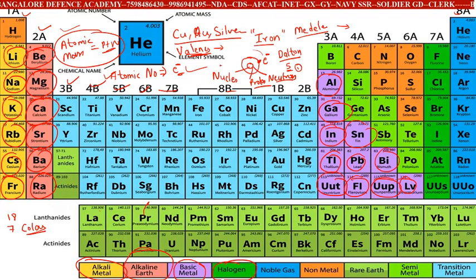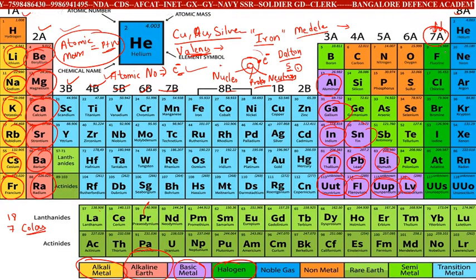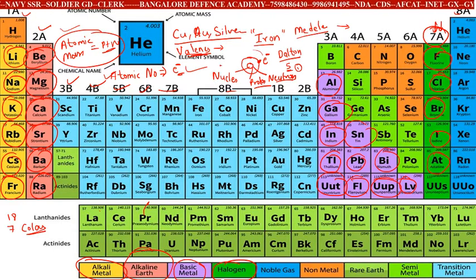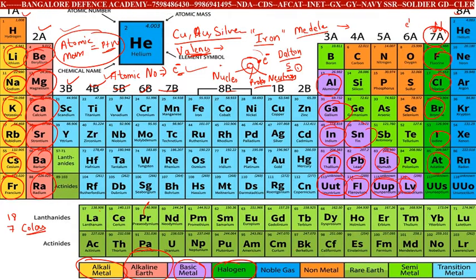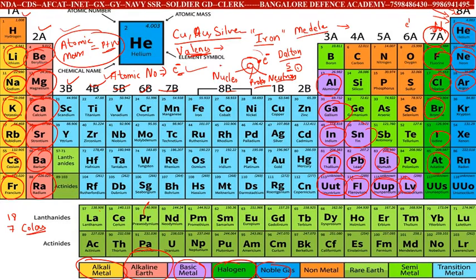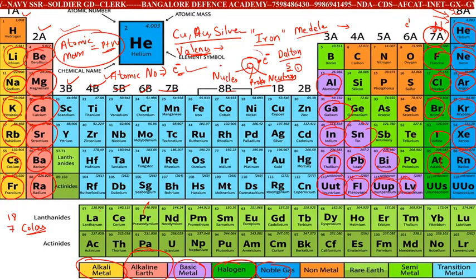Let us understand halogens. In column 7A you can see fluorine, chlorine, bromine, iodine, and astatine — these are all halogens. Halogens have one electron less in their last orbit. Next, you have noble gases in the 18th column: helium, neon, argon, krypton, xenon, and radon. These are all inert gases.